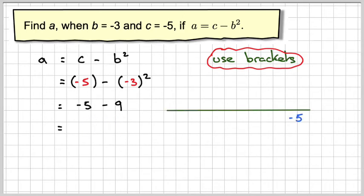So if we look at this on a number line, we've got minus 5 and then we're going to go back 9. And that will take me to minus 14. So I get an answer of minus 14.